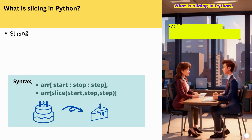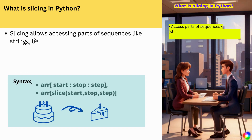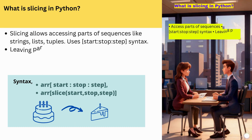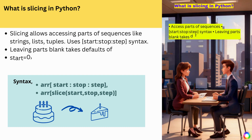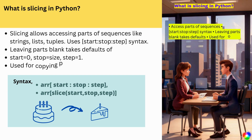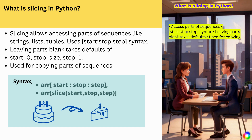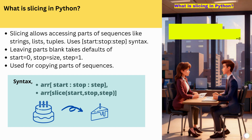What is slicing in Python? Slicing allows accessing parts of sequences like strings, lists, and tuples. It uses start, stop, step syntax. Leaving parts blank takes defaults of start equals zero, stop equals size, step equals one. Use for copying parts of sequences.